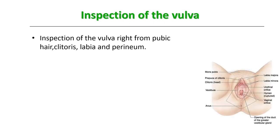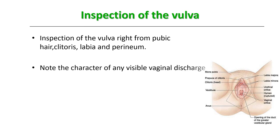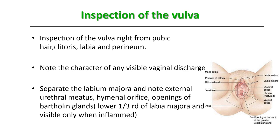Inspection of the vulva: inspect from the pubic hair, clitoris, labia, and perineum. Note the character of any visible vaginal discharge. Separate the labia majora very gently and note the external urethral meatus, position of the hymenal orifice, and the opening of both Bartholin glands — located at the lower one-third of the labia majora, visible only when inflamed in cases of a Bartholin cyst or Bartholin abscess.